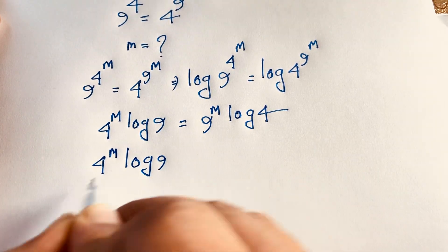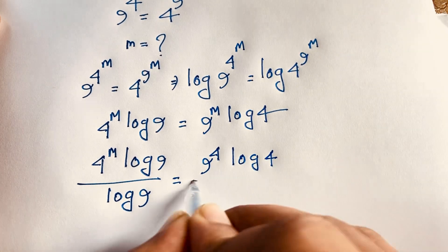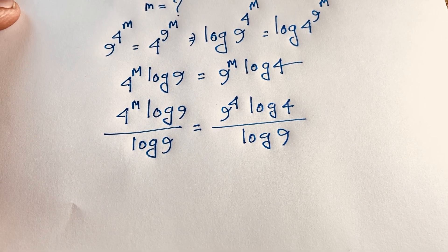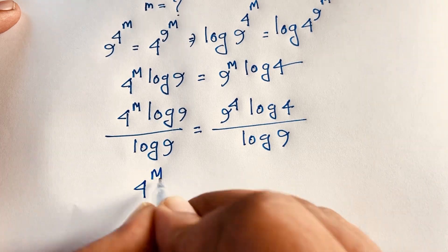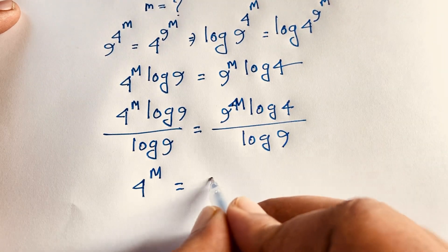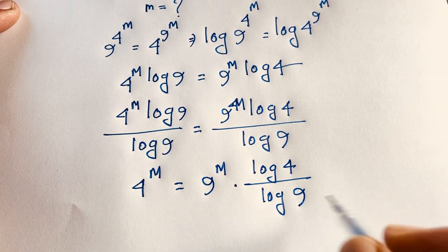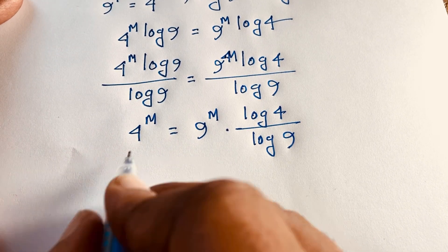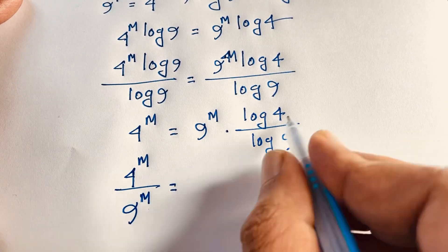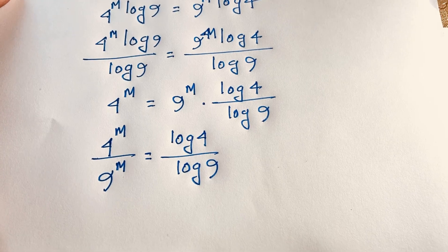Now I divide both sides by log 9. The log 9 cancels on the left side, giving us 4 to the power m is equal to 9 to the power m times log 4 over log 9. Then I move 9 to the power m to the left side, so 4 to the power m over 9 to the power m is equal to log 4 over log 9.